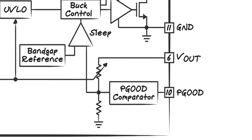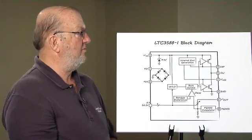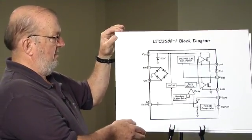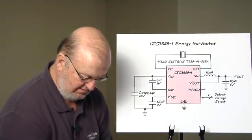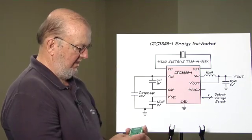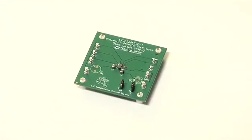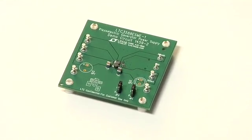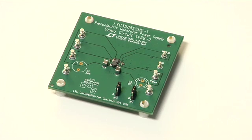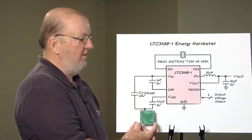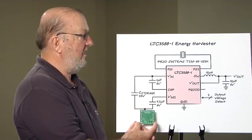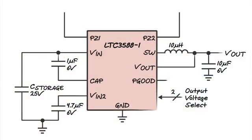This is an example of the demo board that's available at your Linear Technology local sales office or you can go to www.linear.com and request a demo board for the 3588. It consists of the 3588, an input storage element, an output storage element, and three other components to complete your energy harvesting system.